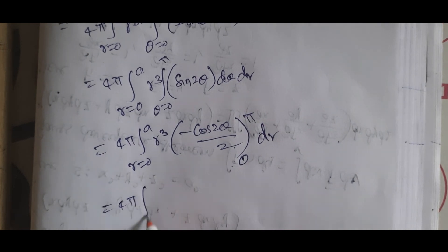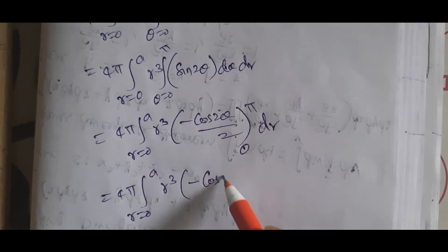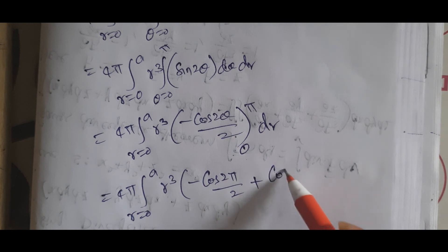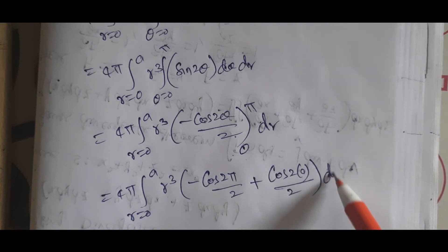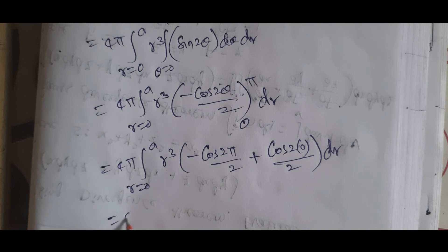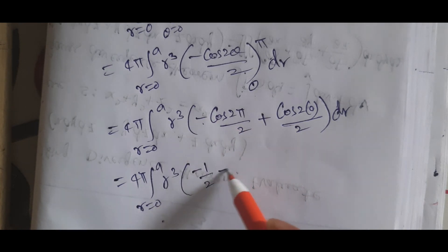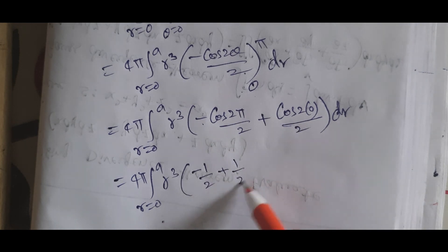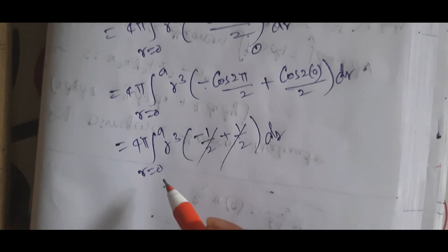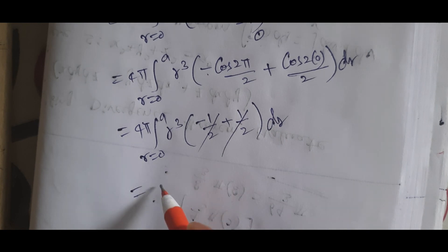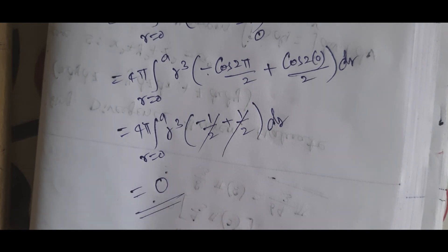That equals 4π r = 0 to a, R³. Upper limit: minus cos 2π by 2. Lower limit: plus cos 0 by 2, dr. 4π, r = 0 to a, R³. Cos 2π = 1, minus 1/2. Plus cos 0 = 1, plus 1/2, dr. Plus 1/2 minus 1/2 cancel. This is 0. This is the result.